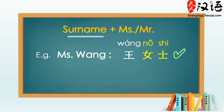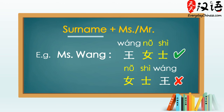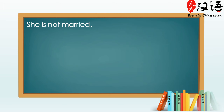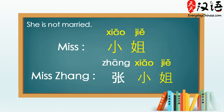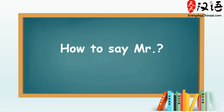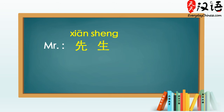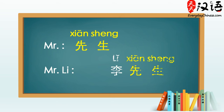But if you know she's not married, you can call her Miss, which is 小姐. So Miss Zhang is 张小姐. What about Mr.? The Chinese word for Mr. is 先生. For example, to say Mr. Li, we say 李先生.